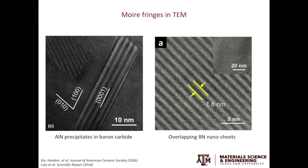Here are some examples. The first is from my research when I was working with Professor Hemker. The matrix here is boron carbide and the precipitates are aluminum nitride. If you look at this precipitate, you see these bright-dark-bright-dark stripes — these are the moiré fringes. You can also see moiré fringes from another precipitate. For the TEM image on the right, it was published by Liao and co-authors in Scientific Reports in 2016. They looked at overlapping boron nitride nanosheets. Again, you can see these moiré fringes.